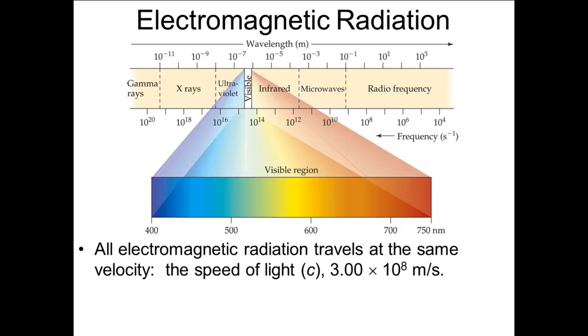The speed of light, given the symbol C, is a constant in a vacuum regardless of the frequency of the wave. So the higher the frequency, the shorter the wavelength, and vice versa.